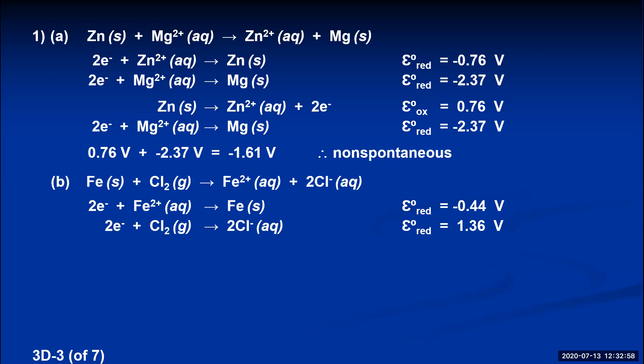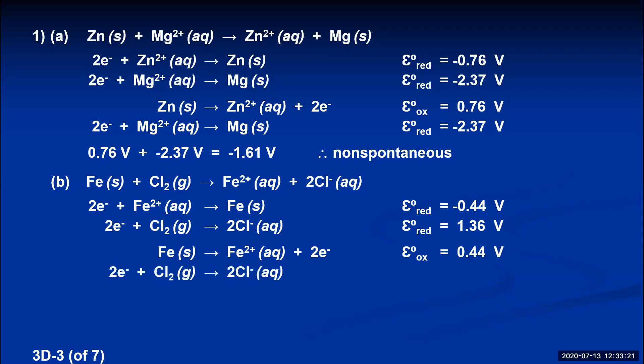The chlorine reaction is written perfectly — diatomic chlorine is a reactant and chloride ions are a product. But the iron reaction is written incorrectly because we need elemental iron on the left and iron 2+ ions on the right. So I reverse the iron reduction reaction to make it an oxidation, and its oxidation potential becomes positive 0.44. The chlorine reduction potential was 1.36, and adding these two together gives 1.80, which is a positive voltage — meaning the reaction as written is spontaneous.